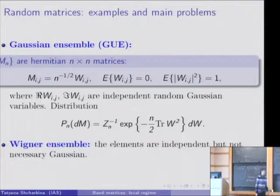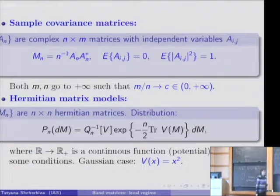The second example is very similar to the previous one. It's a Wigner ensemble. It also has independent elements with mean zero and variance one, but the elements should be not necessarily Gaussian, so we can take any distribution.